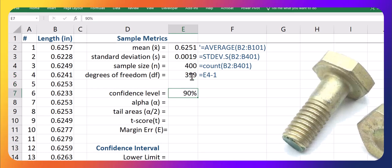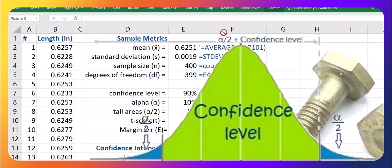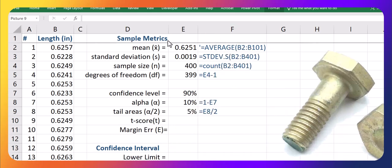Let's say we want to build up the 90% confidence interval. That gives us an alpha of 1 minus 90%, so 1 minus E7. That gives us a 10% area outside of the confidence interval. And if we want to use what's called the t.inv formula to get the t-score, we actually need to take that area and divide it by 2. Let's have a look at why here. I'm just going to pause the video and pull up this graph.